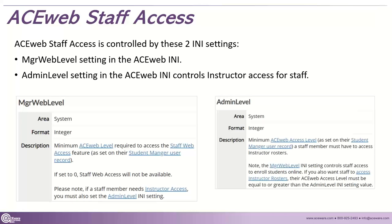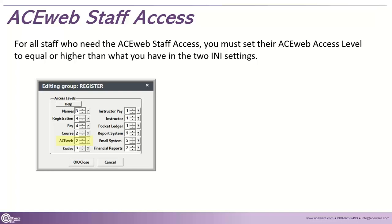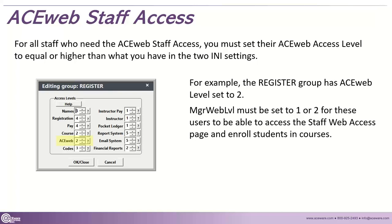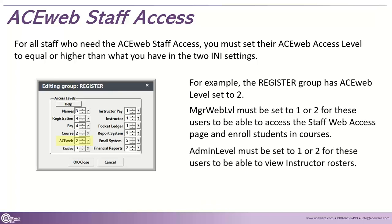There's also an Admin level that controls instructor access for staff — how much can they see? Anyone who needs ACE Web staff access must have their ACE Web access level set equal to or higher than what you have in those settings. For example, in our register group, they're set to two. So you would need that ACE Web access level set to two so that person could take advantage of that feature. Manager Web would need to be one or two, and Admin level also one or two so they could do instructor rosters.